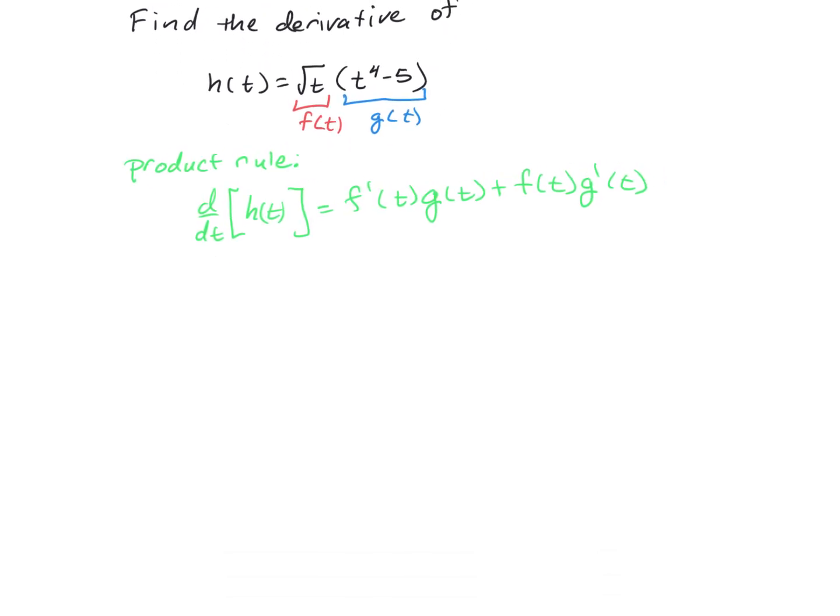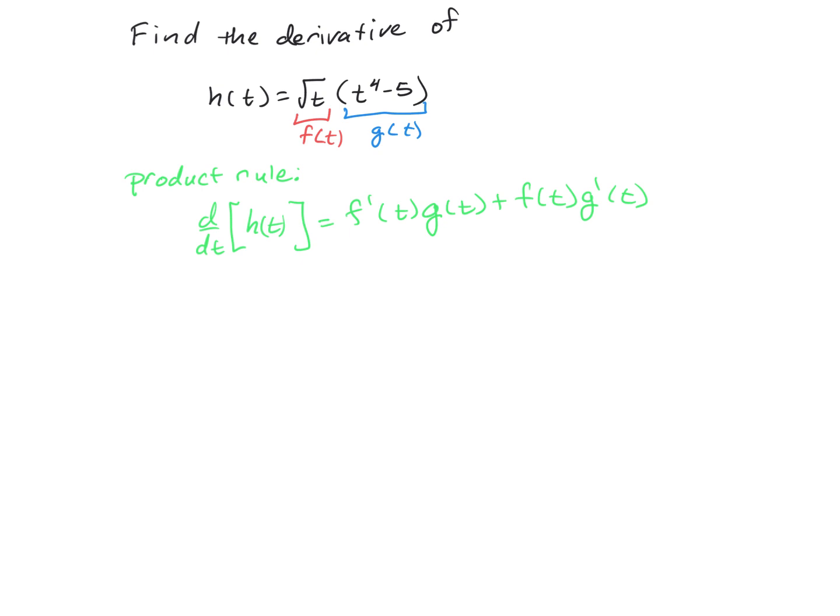So when we find our derivative h'(t), it's going to be the derivative of the first. This can be rewritten as t^(1/2) times (t^4 - 5). When we find that derivative using the power rule, that's (1/2)t^(-1/2). The second function g is just multiplied along, so that's (t^4 - 5).